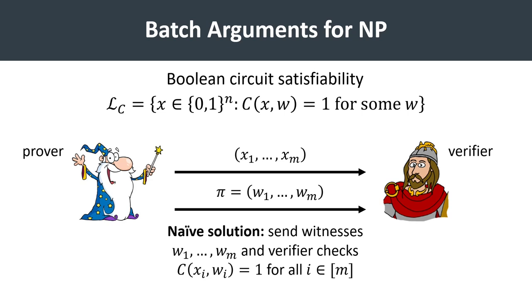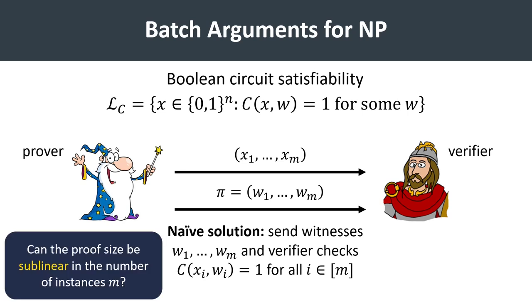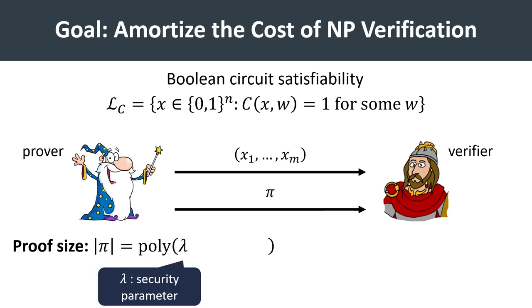A natural question is whether we can do better. Namely, can we authenticate m NP statements with a proof whose size is sublinear in m? This is the setting of batch arguments.